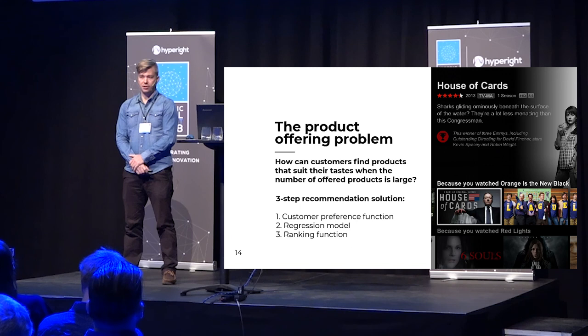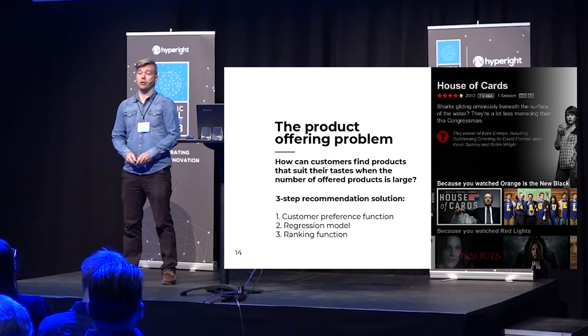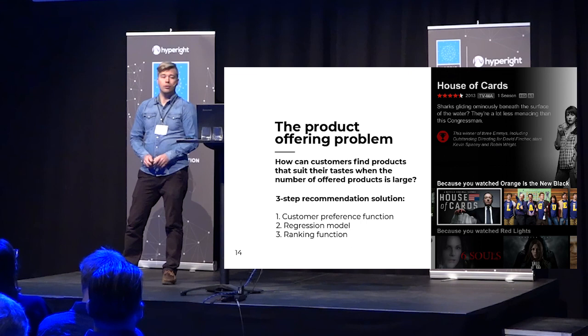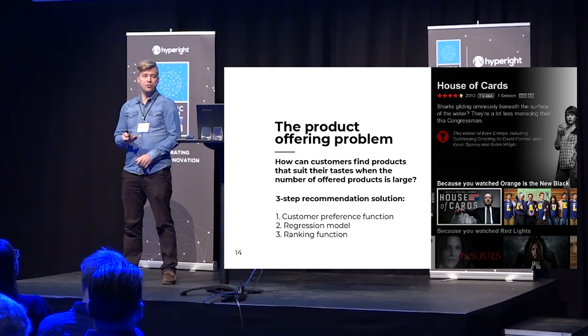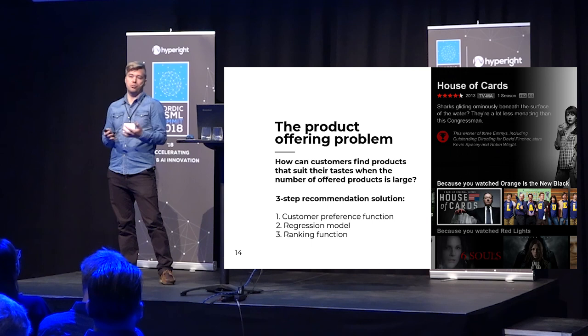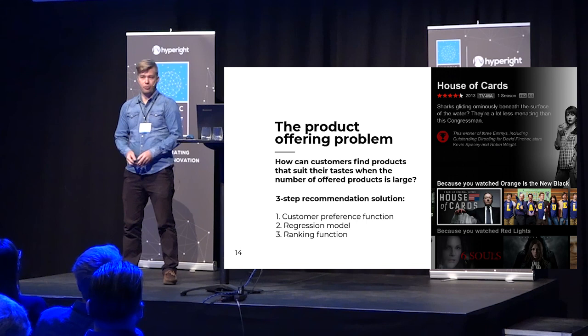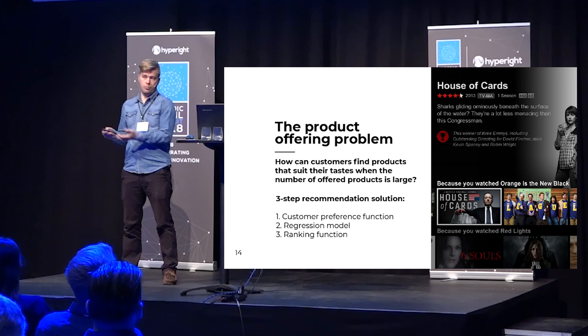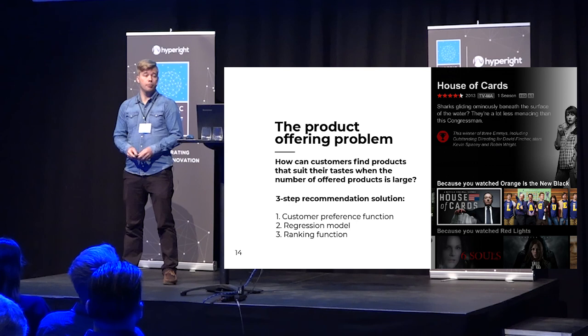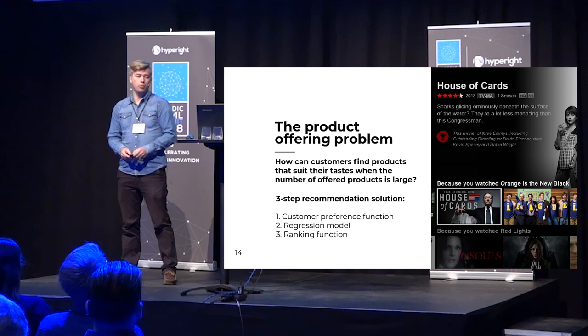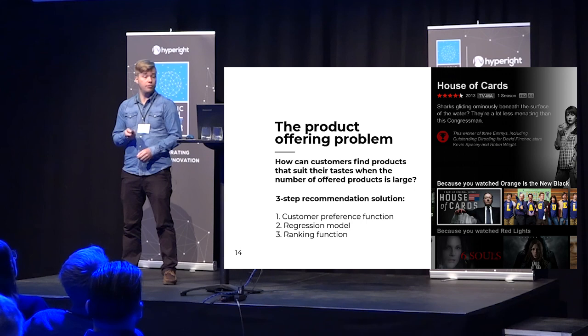Another problem is when you start to have lots of products and offerings at the same time — it's difficult for the customer to find the ones relevant to them. This is something Netflix has been very involved in with some compelling solutions. The question is how can we make sure that we suit the tastes of a big diversity of customers? A three-step solution to the recommendation problem is: we start with some sort of preference function because we probably don't have any ratings; after that we model this as a regression problem; and then we do some sort of ranking with the results.